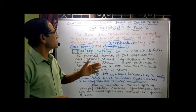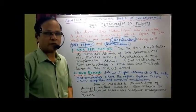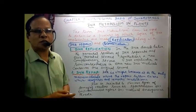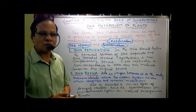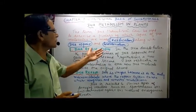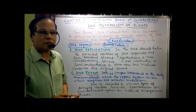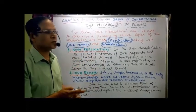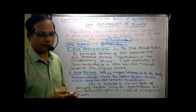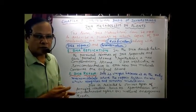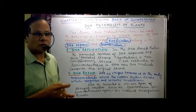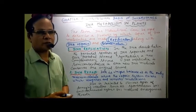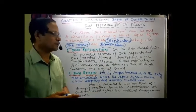DNA Metabolism refers to a process by which copies of DNA molecules are made - that is the replication process - along with DNA repair as well as recombination. Replication, repair and recombination together constitute DNA Metabolism. Copies of DNA are made - that is called replication - along with DNA repair and also the recombination process, a regular event that is happening during meiosis.